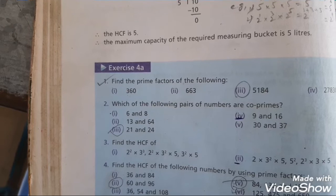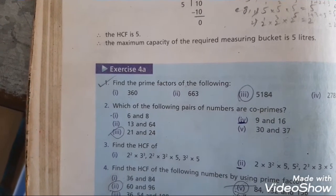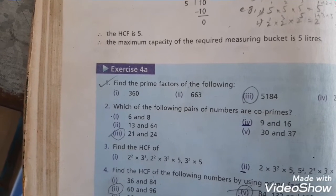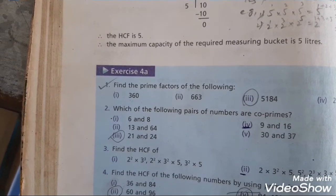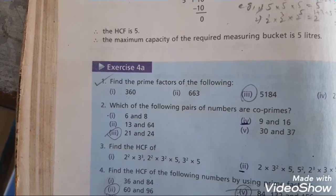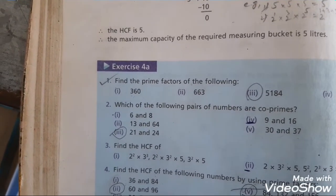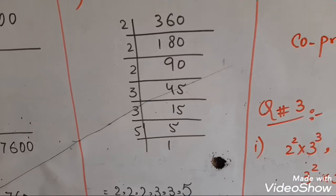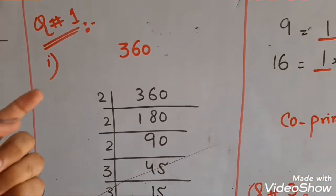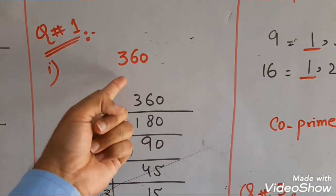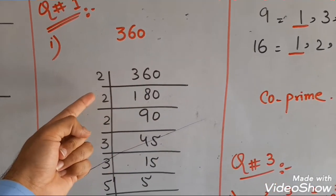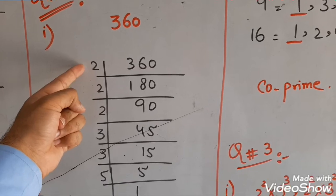Page number 52, here is exercise number 4.8, question number 1: find the prime factors of the following. The first part of this question is 360 — आप लोगों ने 360 के prime factors find करने हैं। 360 की prime factorization के लिए यहाँ पर 360 लिखूँगा और 2 से divide करूँगा, because 2 is a prime number.